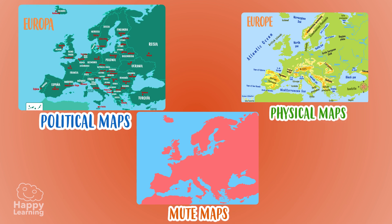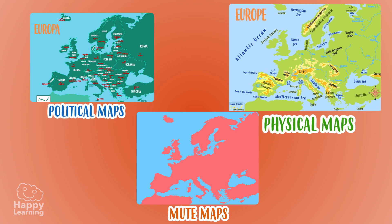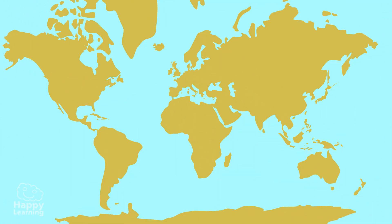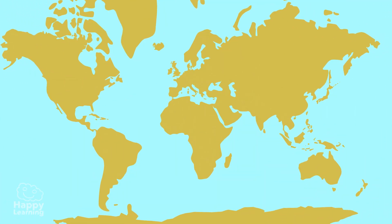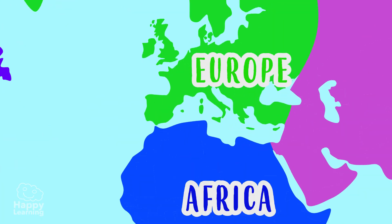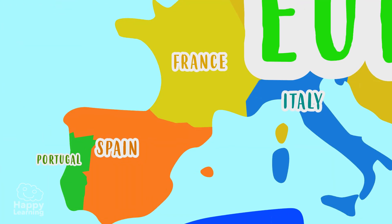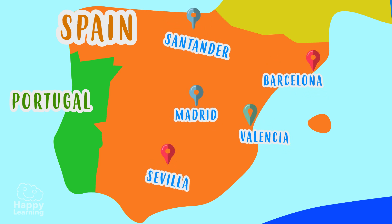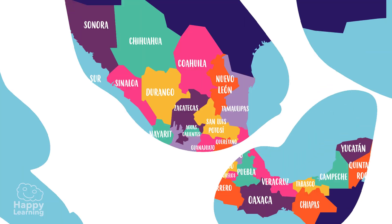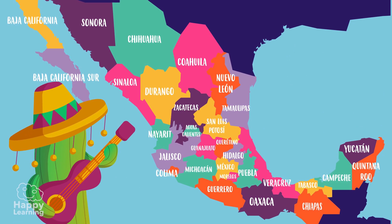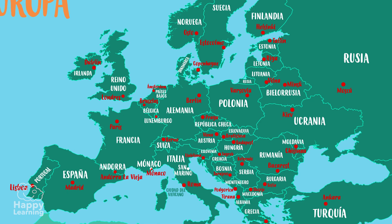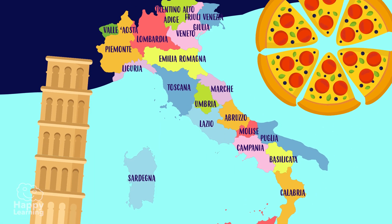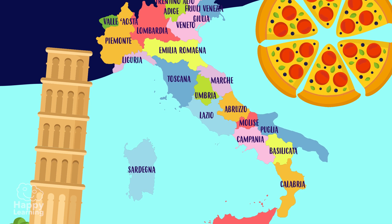Political maps, physical maps, and mute maps. Political maps show us how the continents, countries, and cities are divided and what they are called. Look, this is a political map of Mexico. This is a political map of Europe. And this is a political map of Italy — it looks like a boot, doesn't it?